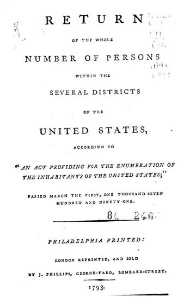Enumerators were instructed to write 'White,' 'Black,' 'Mulatto,' 'Quadroon,' 'Octoroon,' 'Chinese,' 'Japanese,' or 'Indian.'